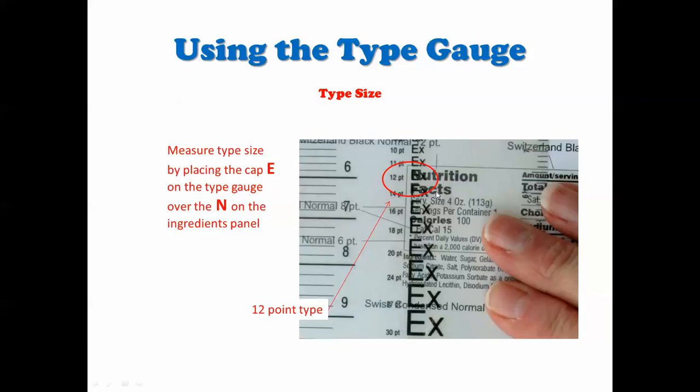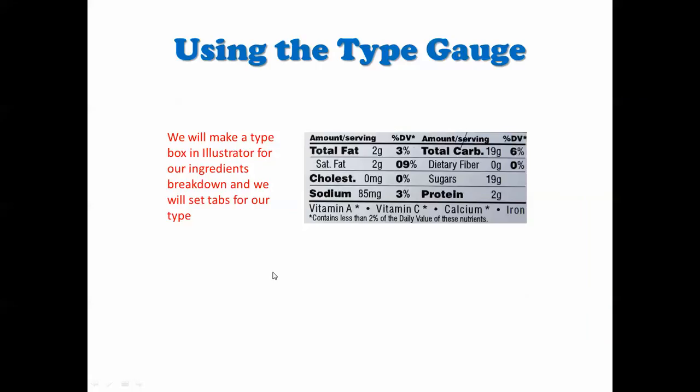Now here's how you line up your type to figure out the type size. You put the type gauge over the N here and you place the E over it, and when you get to the one that matches you will see that it's 12-point type.